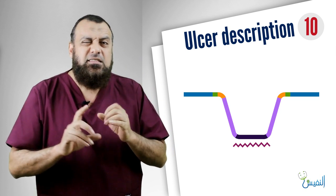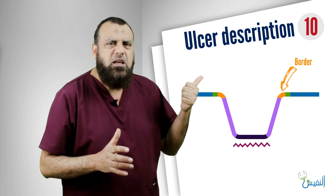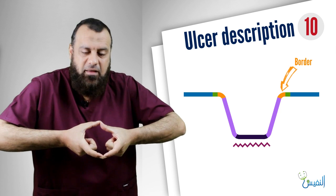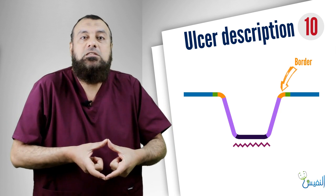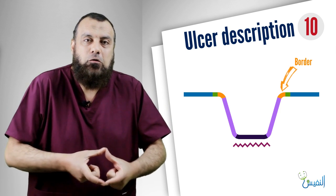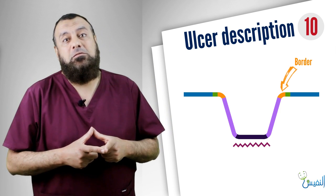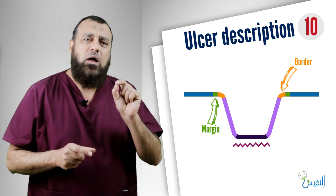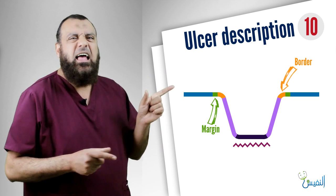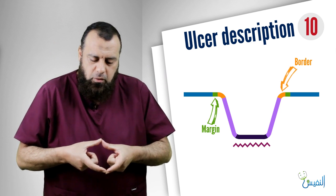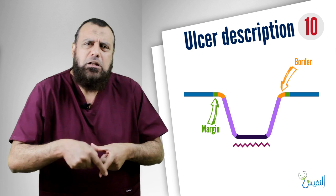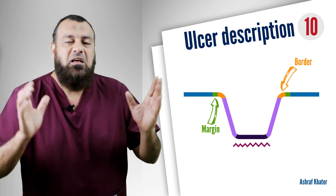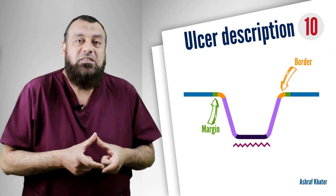The first item is the border of the ulcer. The border is the outline of the ulcer — the visible outline shape. The second item is the margin, which is just one or two millimeters around the border. The margin may be raised or beaded.